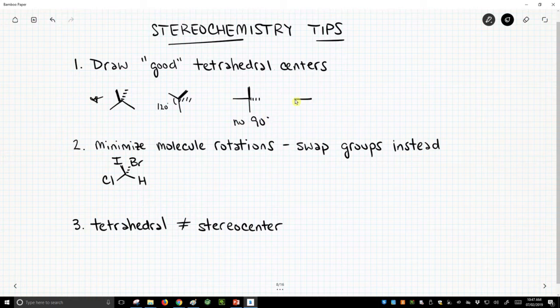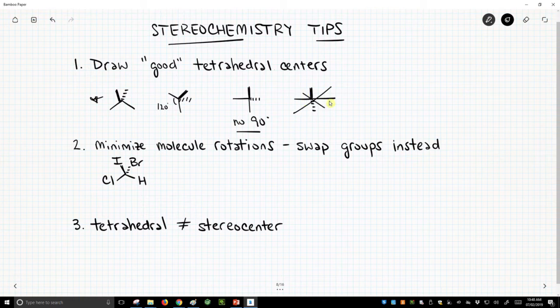Another mistake that's pretty common is that people will draw the two in-plane atoms in a line and then they'll draw a dash and a wedge coming off opposite sides of the atom. At least with the 90 degree one, I can tell what you're trying to do. This is just nonsensical, so avoid that.